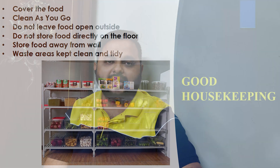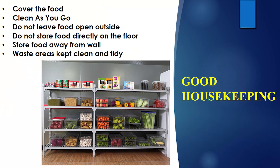The second topic is good housekeeping inside the premises of the food business. With regards to good housekeeping: cover the food — this is the number one control for pests. If food is covered properly in a pest-proof container, the pest will not be able to enter that food area or the food itself.